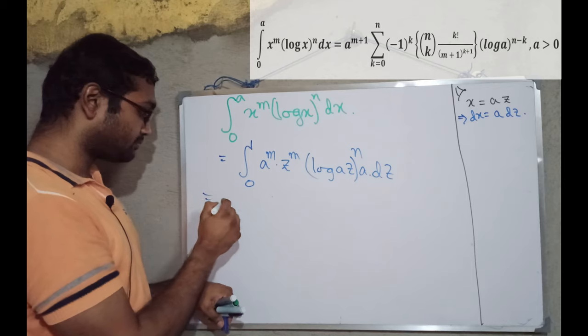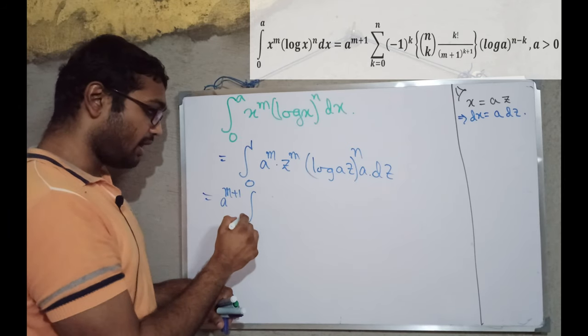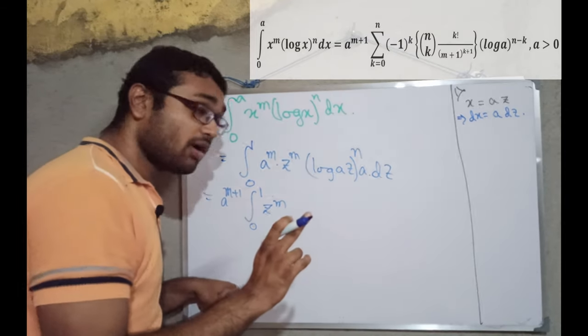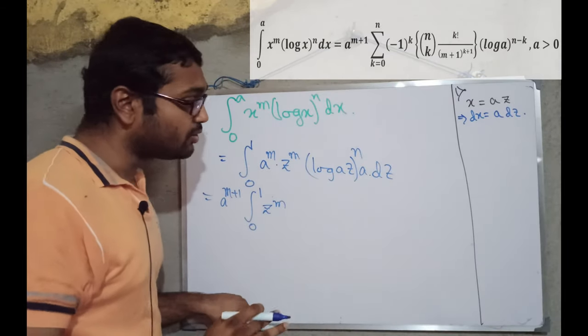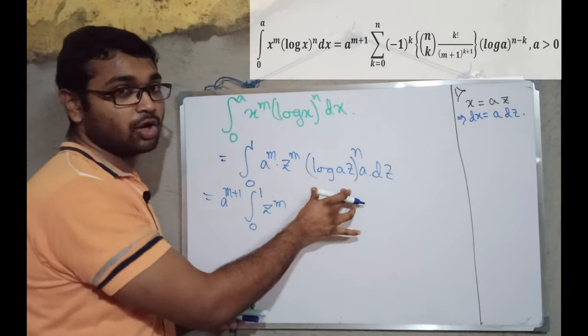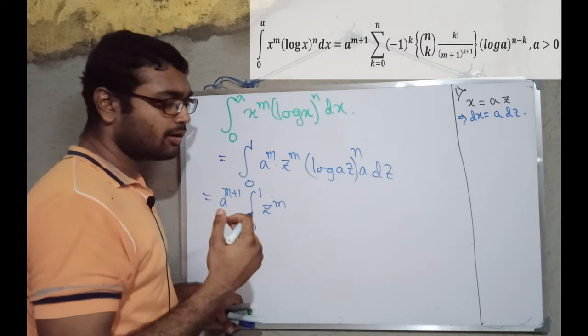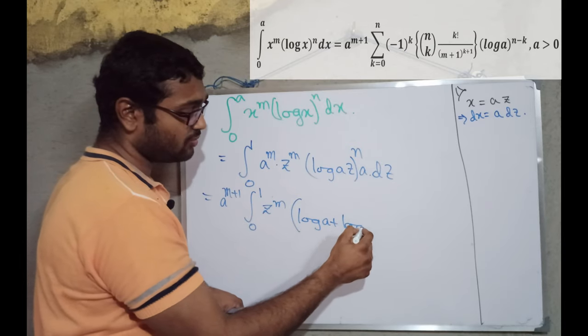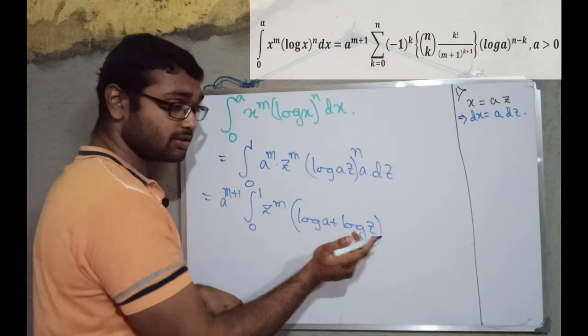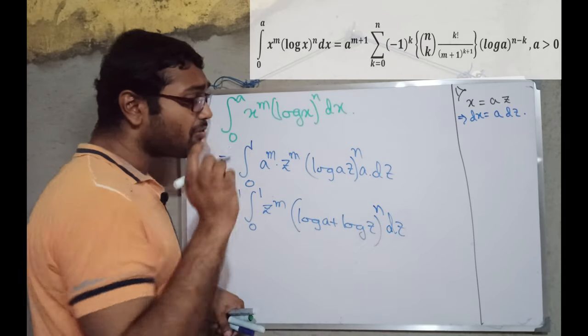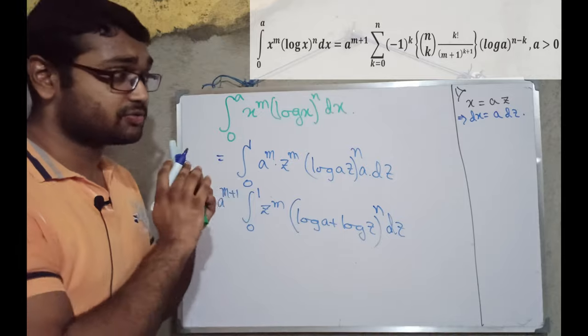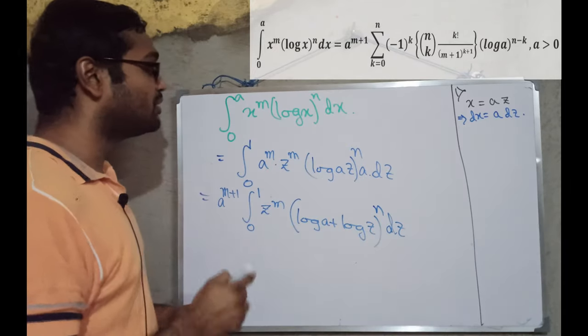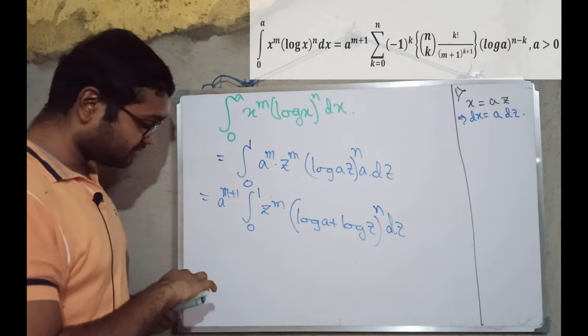So, we are taking this a to the power m plus 1 outside. That is from 0 to 1, z to the power m. Now comes the real trick. Rather than going for substitution of this portion, we are expanding it. How? Let me show you. Log of a plus log of z. We can write this portion to the power n. Yes, if you are thinking about the binomial expansion, then you are thinking right. I am about to do the same thing here.